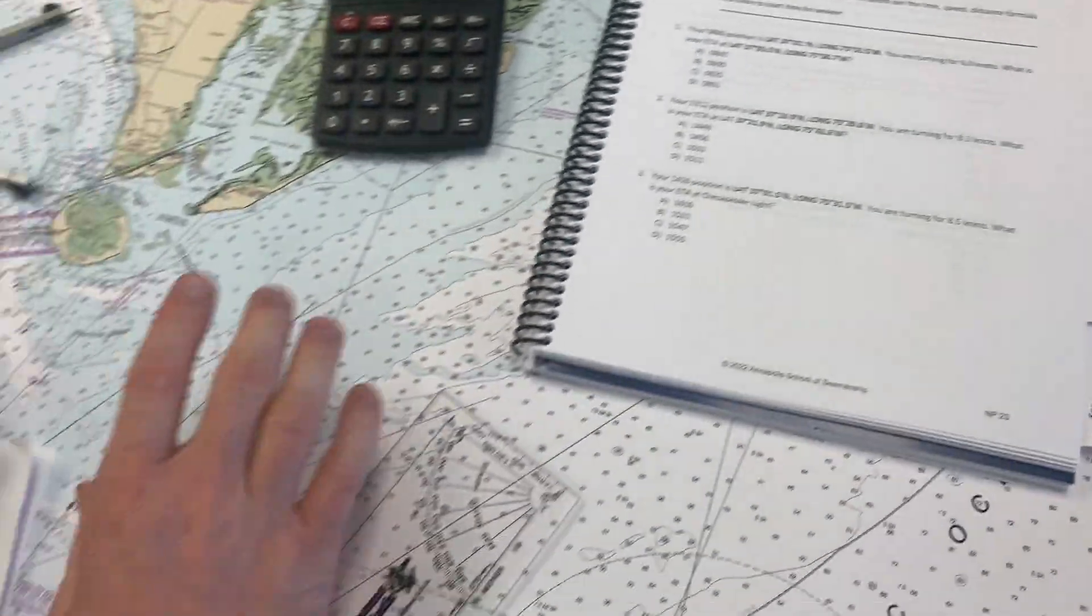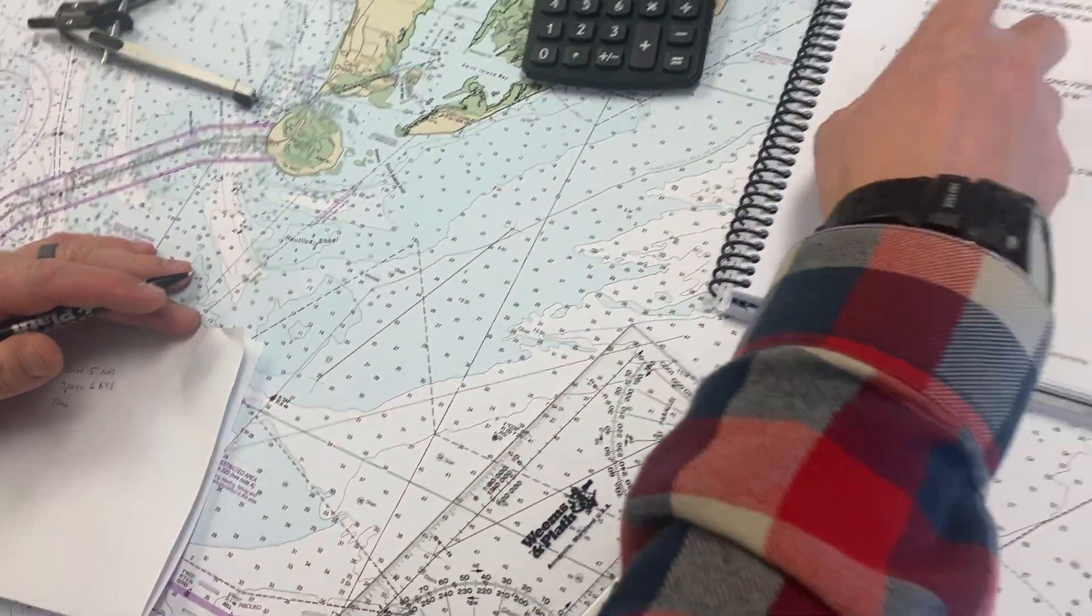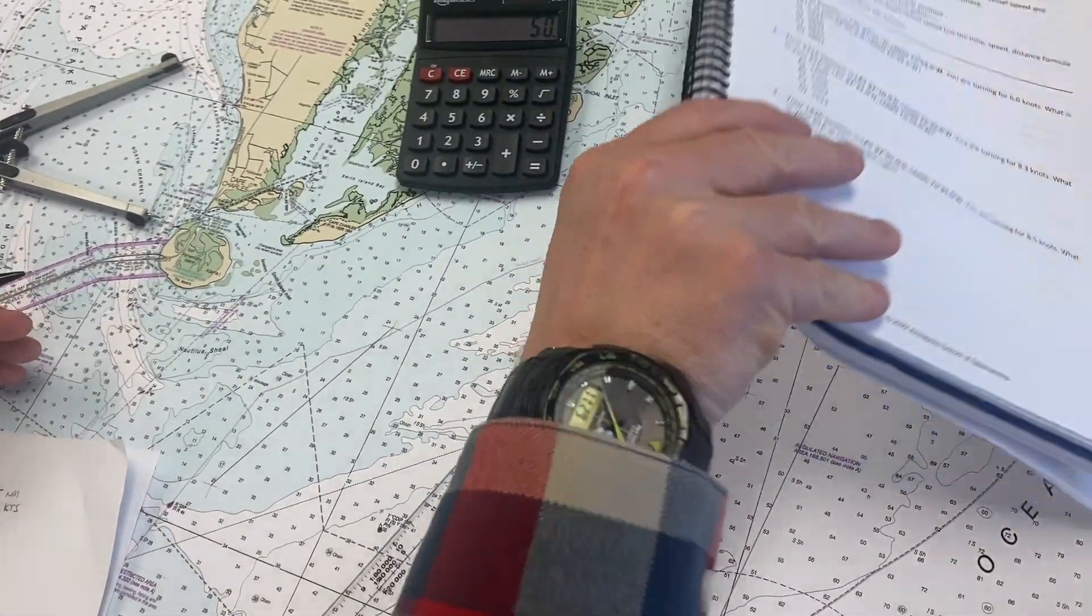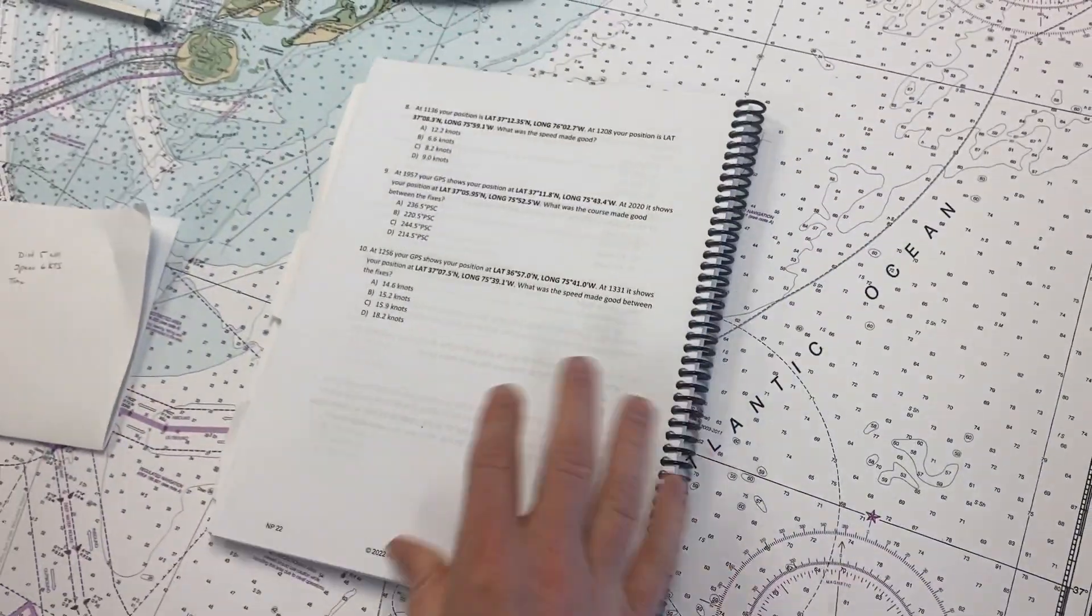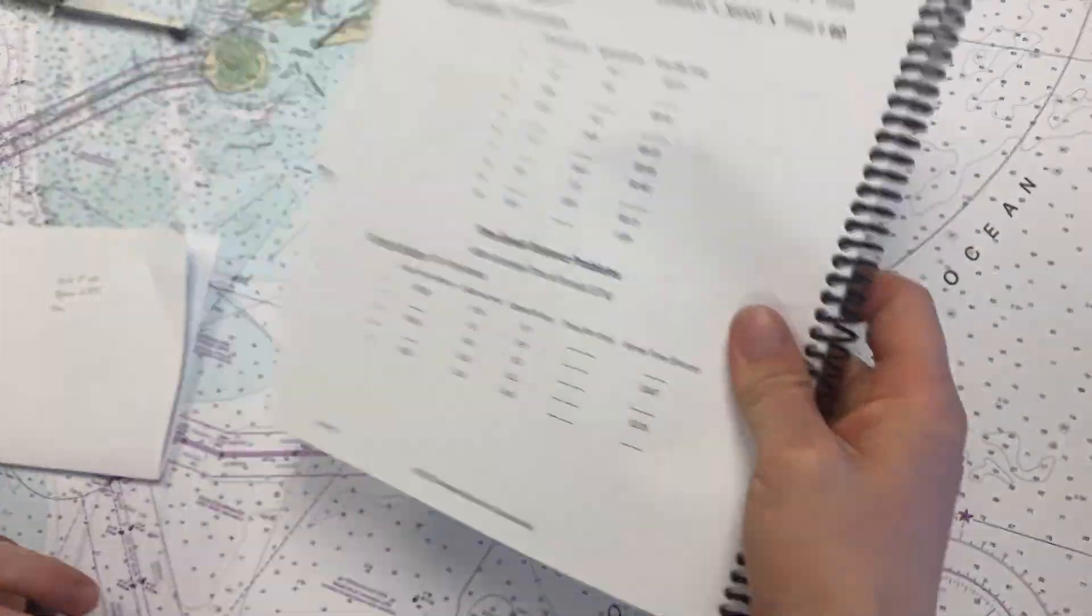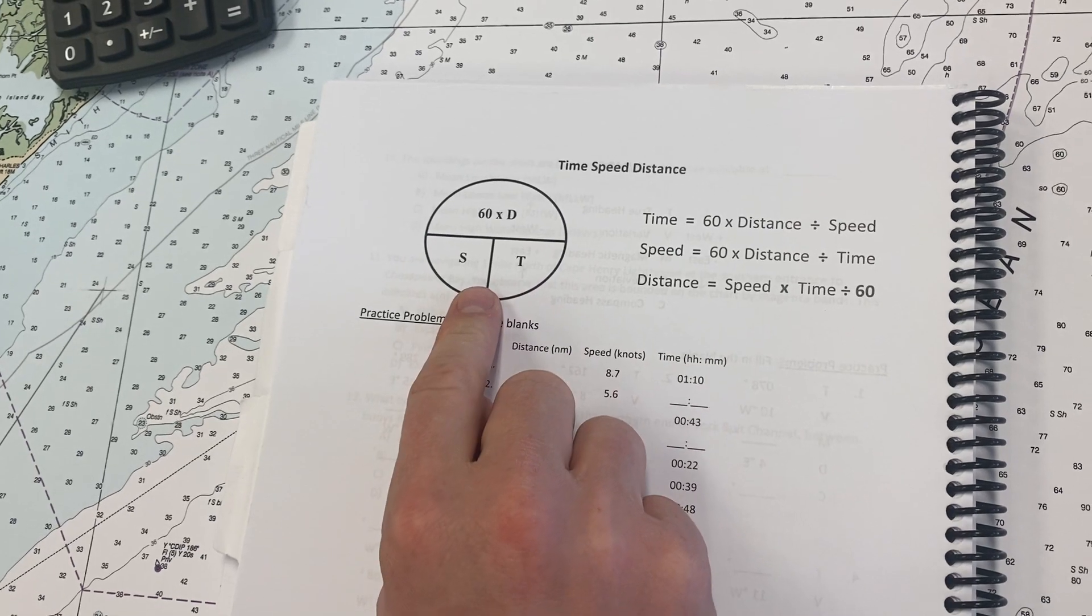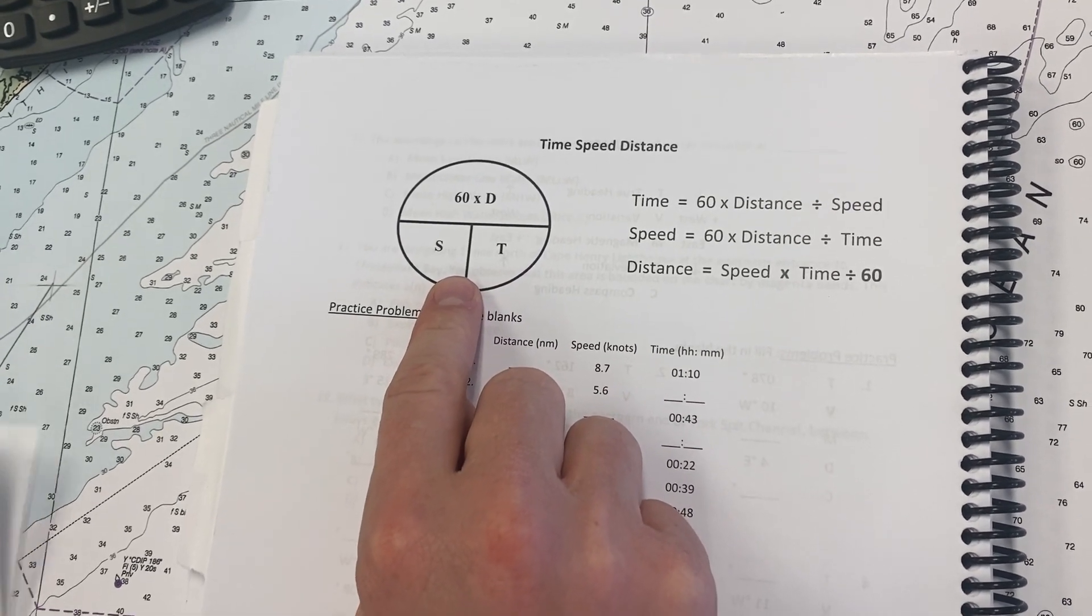We need to know how long it took from getting from point A to point B, so we can add it to our departure time of 0800. So, I'm going to flip back in the book so we can take a look at our time, speed, distance equations, or what I like to use is our 60 D-street.